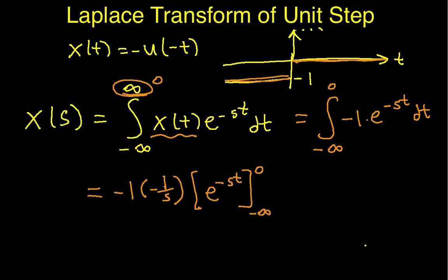We'll do the easy limit first. If I plug zero in for t, then I get one. The harder limit is this negative infinity bit. This is the limit as t approaches negative infinity of e to the minus s t.